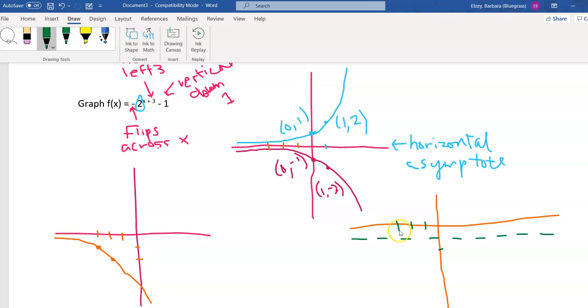So negative 3, negative 2 will be right here. And if I shift this down 1, it'll be at negative 2, negative 3. So negative 2, negative 3. And then let's draw this same shape, but it's approaching this dotted line instead of approaching the x-axis. And there's my final graph.